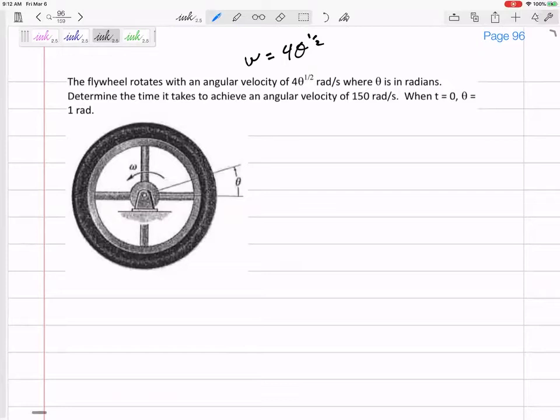Determine the time it takes to achieve an angular velocity of 150. And when t equals 0, theta equals 1.